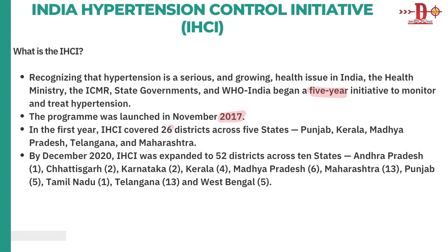By 2020, the initiative was expanded to 52 districts across 10 states, including Andhra Pradesh, Chhattisgarh, Kerala, Madhya Pradesh, Maharashtra, Punjab, Tamil Nadu, Telangana, and West Bengal. This is where the India Hypertension Control Initiative is currently running.